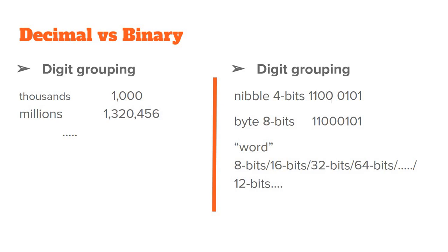1, 1, 0, 0, so these are 4 bits, it's 1 nibble. 0, 1, 0, 1 is another nibble. And then we have 8 bits, so basically 2 nibbles. So, 8 bits, it's called a byte.